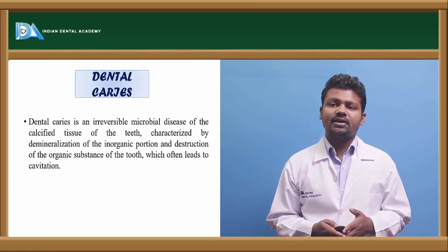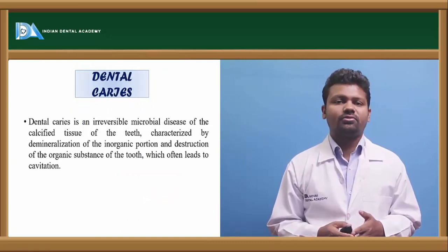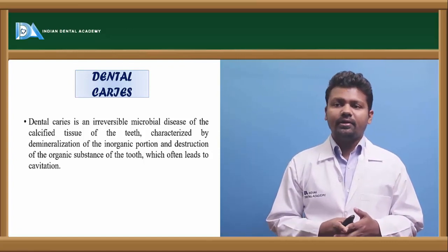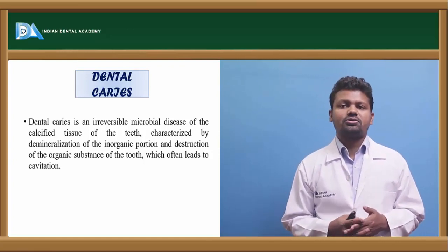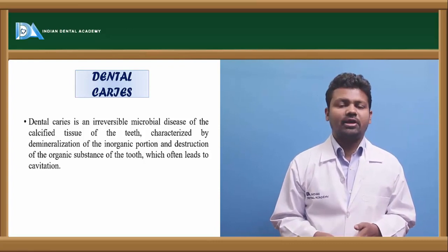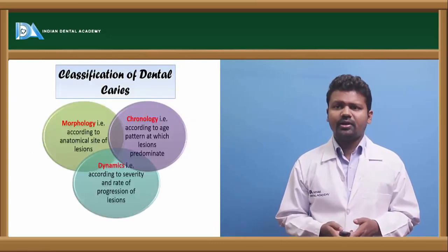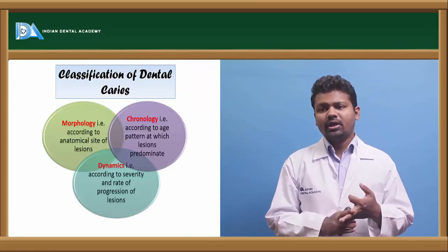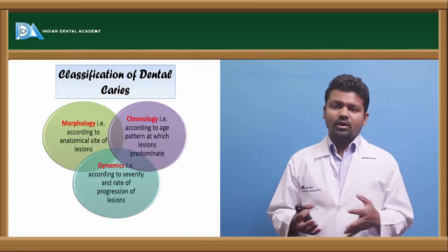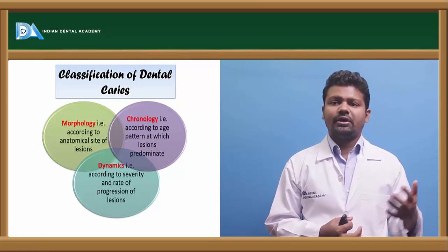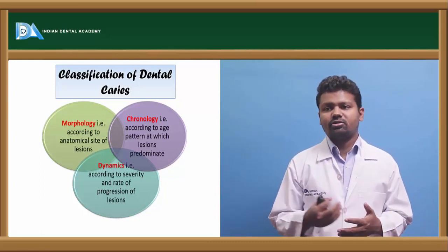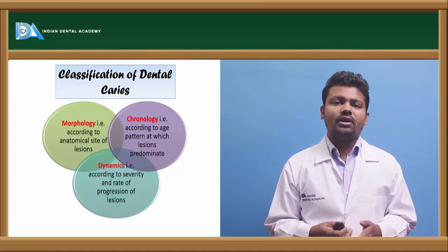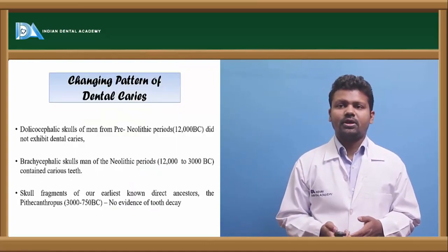Dental caries is an irreversible microbial disease of the calcified tissues of the teeth, characterized by demineralization of the inorganic portion and destruction of the organic substance of the tooth, which often leads to cavitation. Classification of dental caries: according to morphology it is on the anatomical side; according to chronology it is based on age; and according to dynamics it is based on the severity and rate of progression.